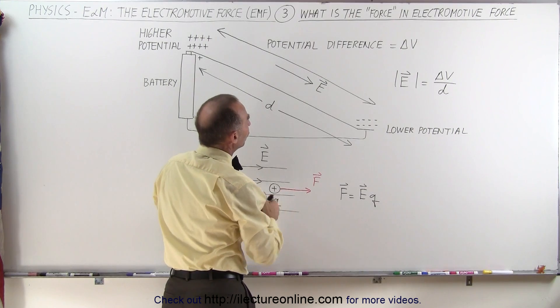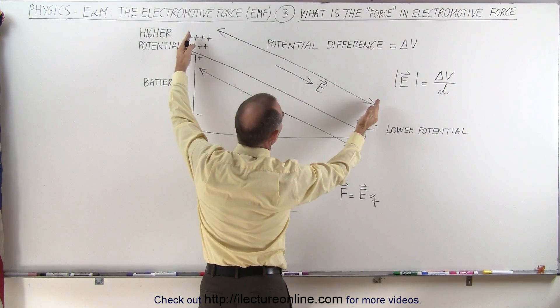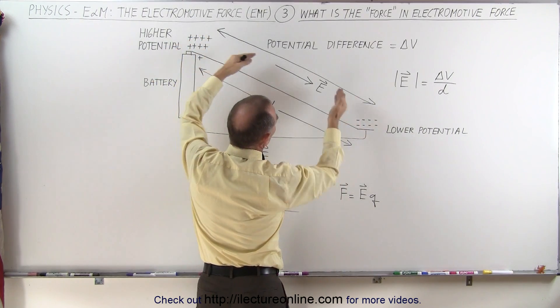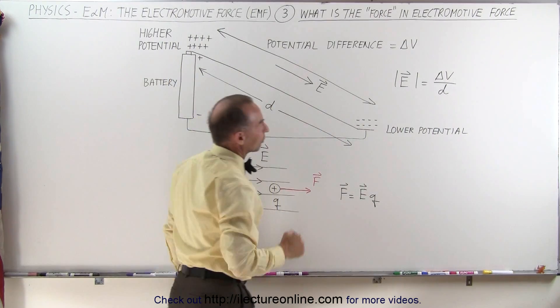An electric field can also be thought of as the ratio of the potential difference divided by the distance between them. The greater the potential difference the stronger the electric field, the smaller the distance the stronger the electric field.